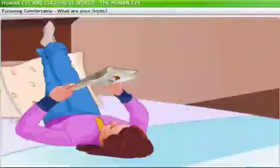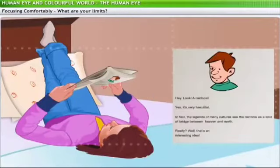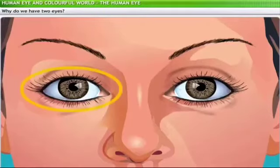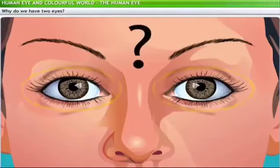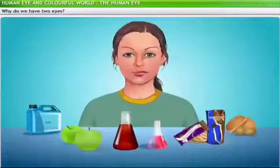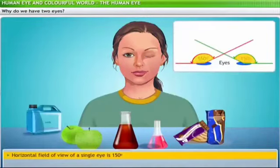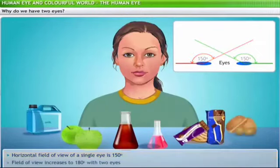Remember when your parents told you not to read in bed or to keep the book further from your eyes? To avoid undue strain, we all need to ensure a minimum distance of 25 cm between our eyes and our books while reading. Considering what a single eye can achieve, why do we need two eyes? The horizontal field of view for a single eye is 150 degrees; to provide a wider field of view of 180 degrees, you need both eyes.